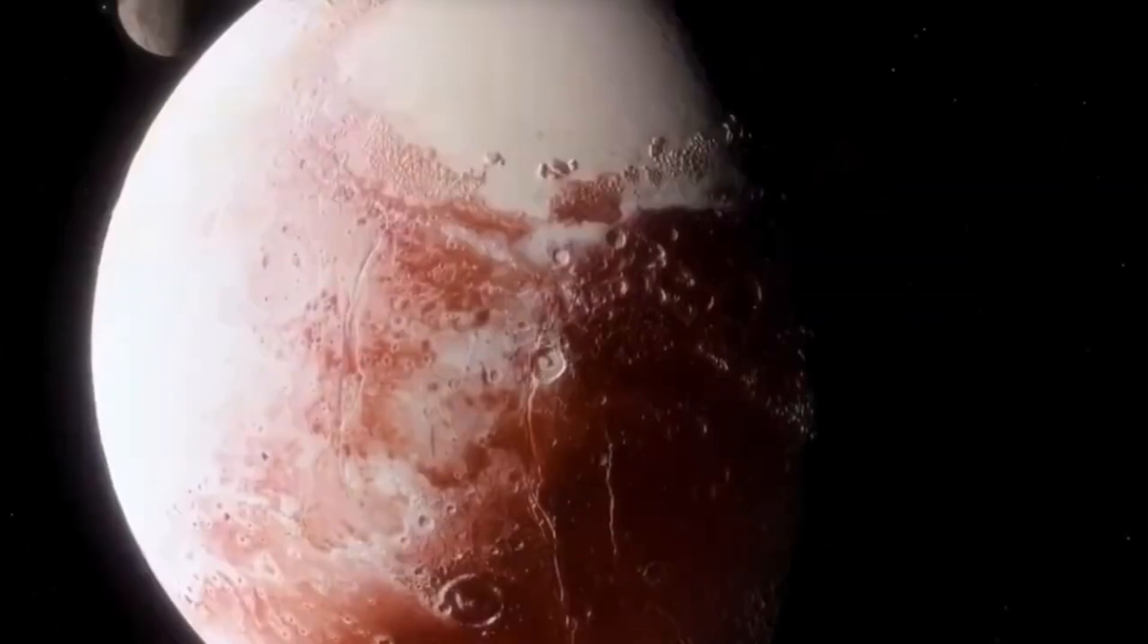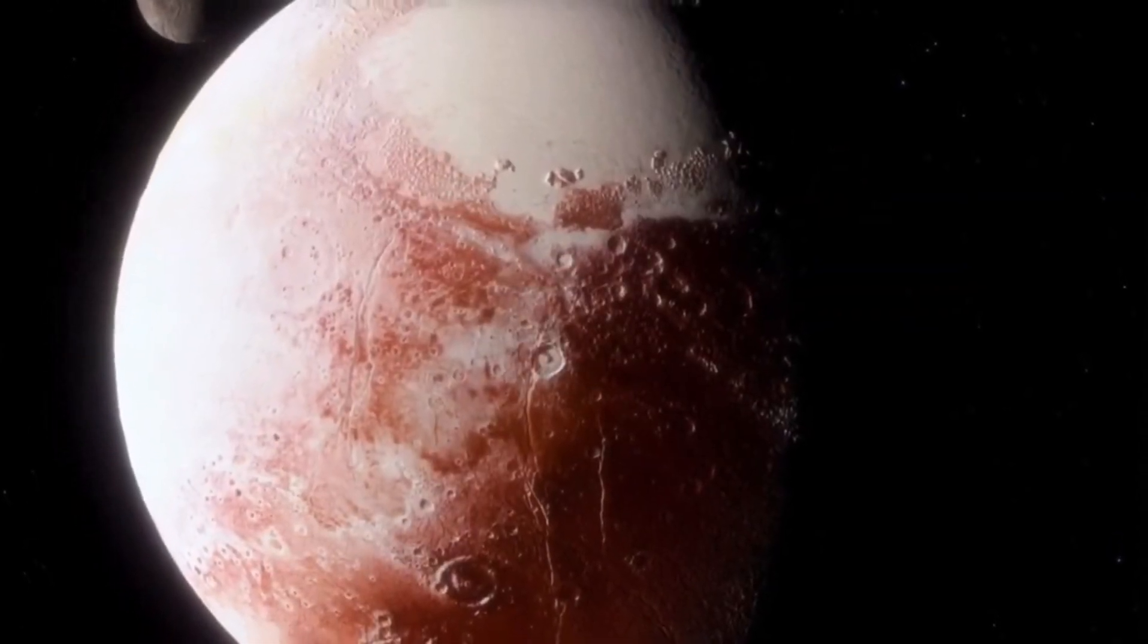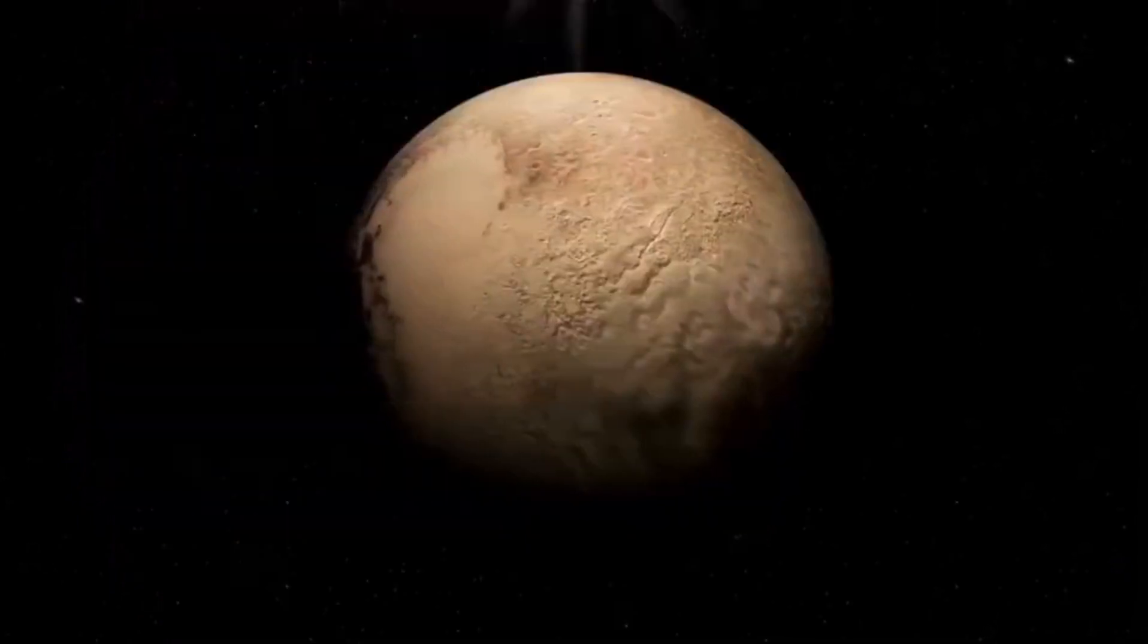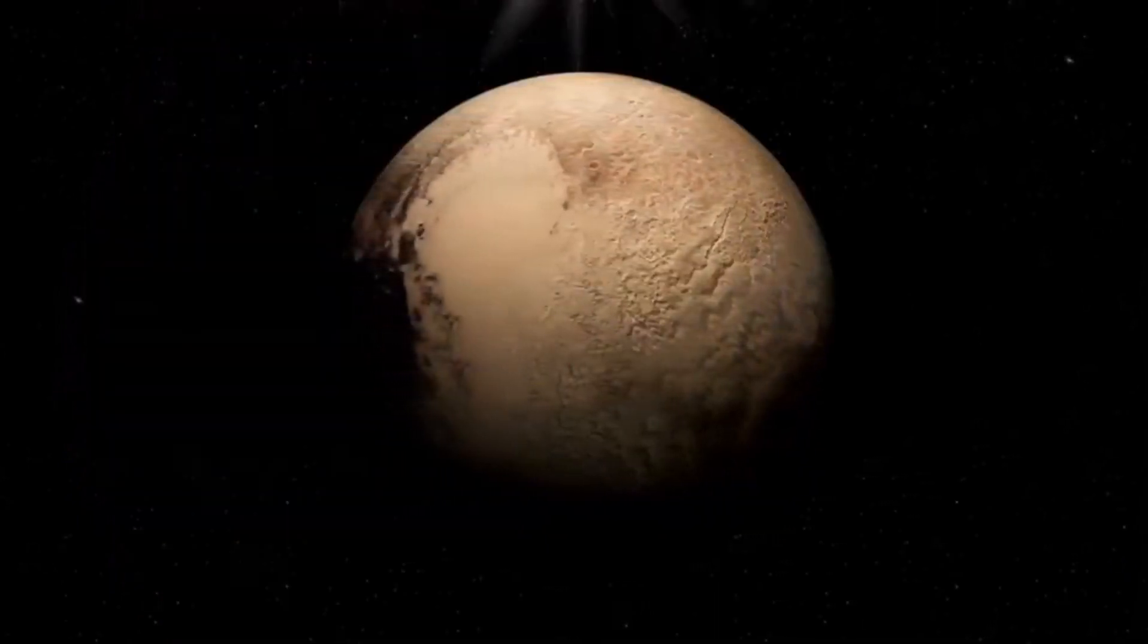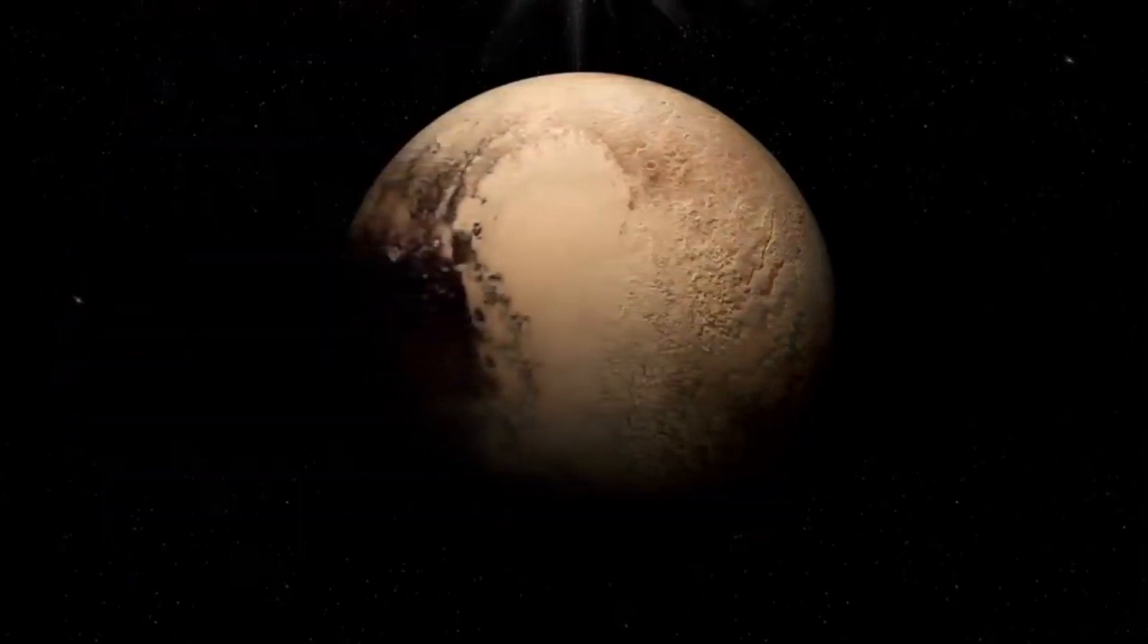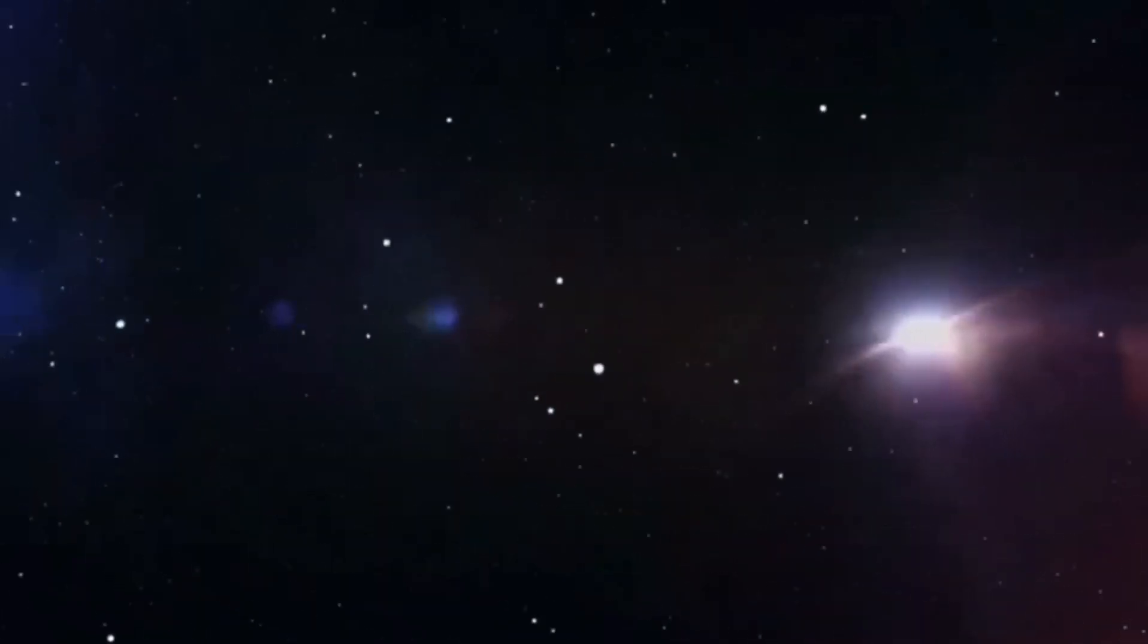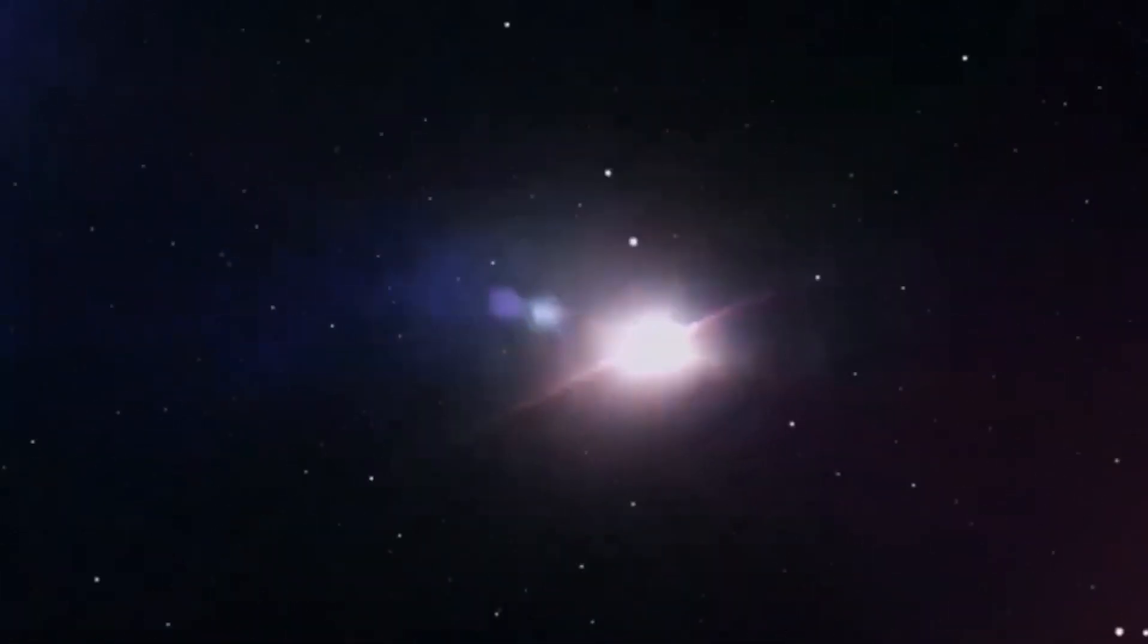Neptune's signature blue color is due to the peculiar vibrational patterns in the molecular structure of gaseous methane, which makes up a significant part of its atmosphere. This striking hue also led to the planet being named after Neptune, the Roman god of the sea. Despite its vibrant appearance, Neptune is one of the least studied planets in our solar system.